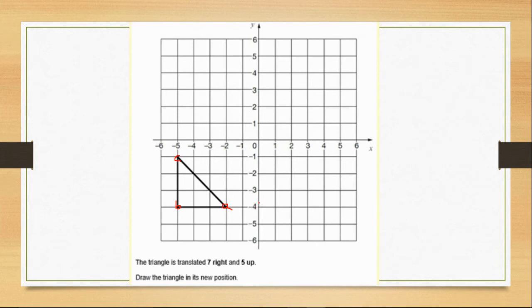So it's going to move 7 right. So 1, 2, 3, 4, 5, 6, 7. So that is where the new point A is going to be. But we've got another instruction here. So it says 5 up. So we've moved 7 right.